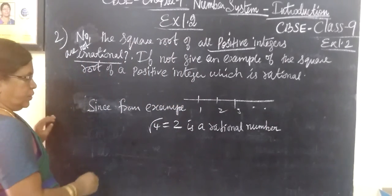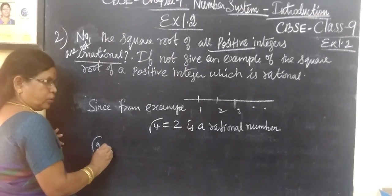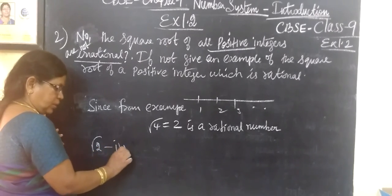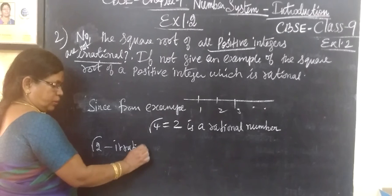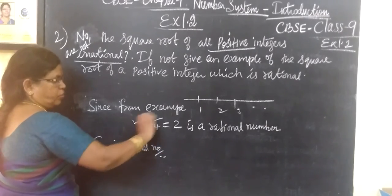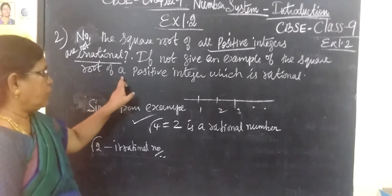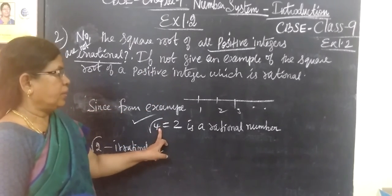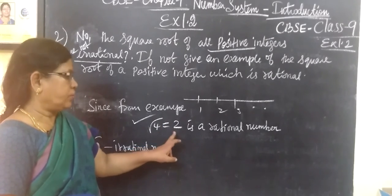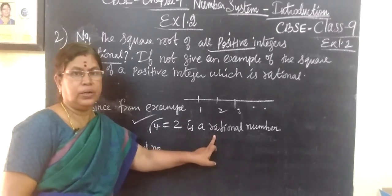In addition, suppose you write root of 2 — this is not a rational number, it is an irrational number. So for the second part: square root of 4 equals 2, which is a rational number. That is the answer.